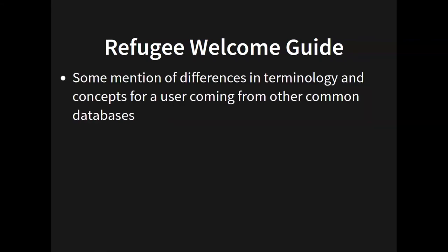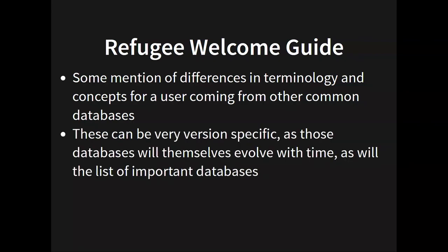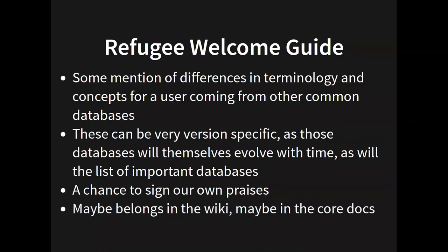A lot of people coming to Postgres are coming from another database. If we had some sort of guide that says 'welcome from Oracle, here's what's different' — very version specific — that would help acclimate people. For example, coming from SQL Server: we have identity columns now and they work very similarly, but you should know we also have sequences, which are kind of Oracle-ish and often get used for the same purposes. It's also a chance for us to toot our own horns and say you had to do this one way in SQL Server and now you have a choice. Maybe this goes in the wiki, maybe in the core docs.